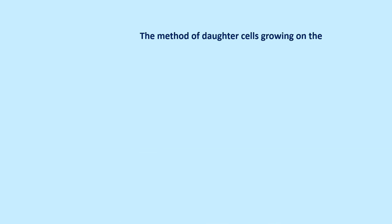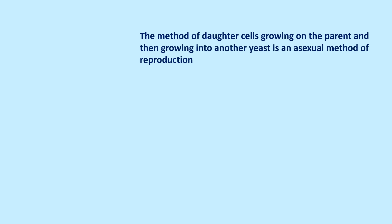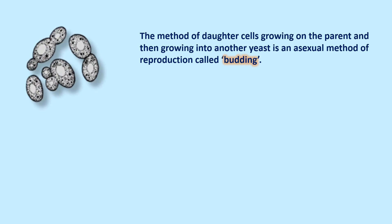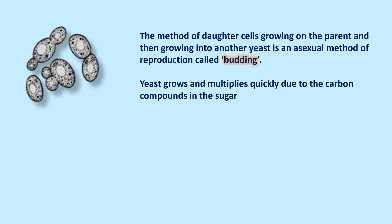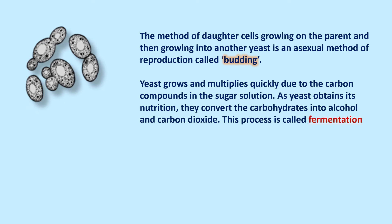Yeast reproduces by an asexual method called budding, where daughter cells grow on the parent yeast and then separate into another yeast. You can see in the picture small buds forming on the parent yeast; when those buds become big enough, they separate and become a new yeast. Yeast grows and multiplies quickly due to carbon compounds in sugar solution.